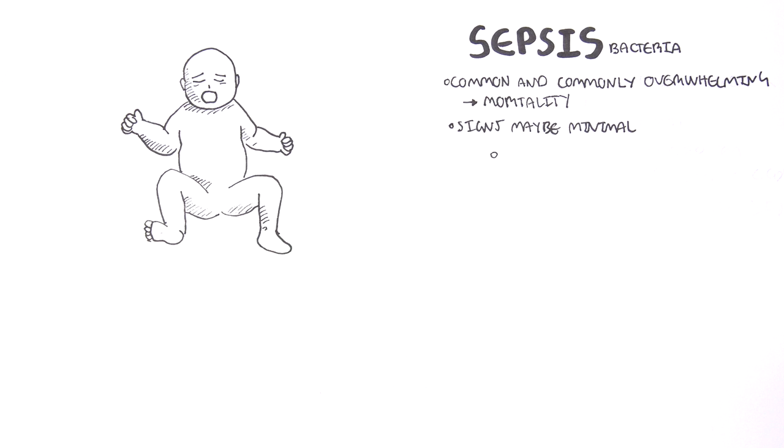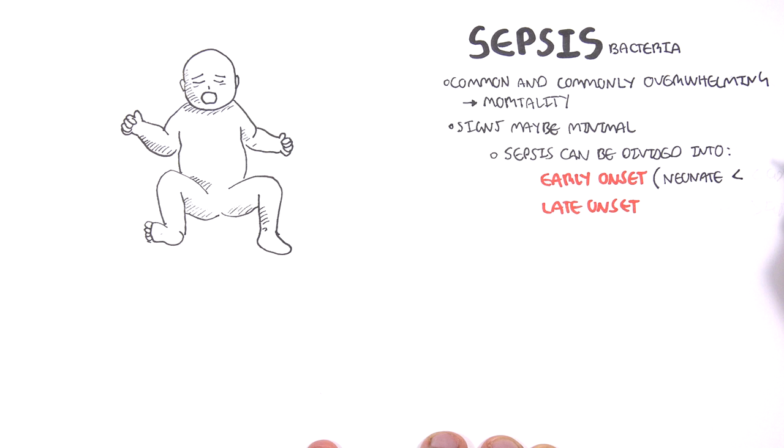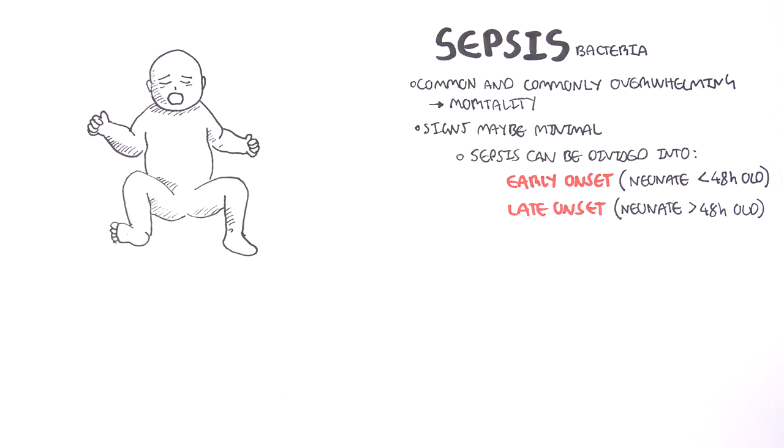Sepsis can be divided into early onset or late onset. Early neonatal sepsis occurs less than 48 hours after delivery. Late onset is when the neonate is already older than 48 hours.